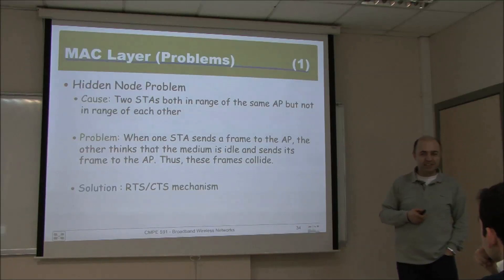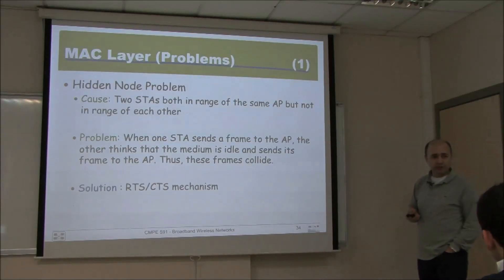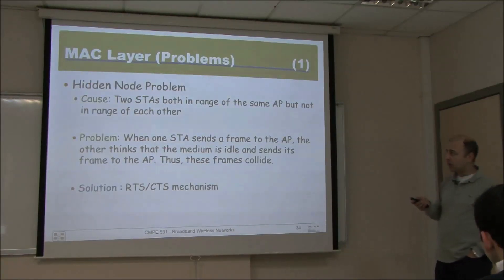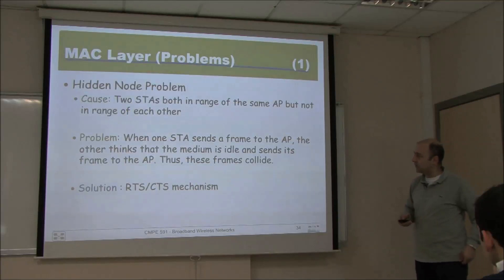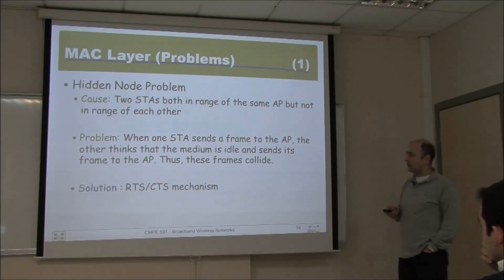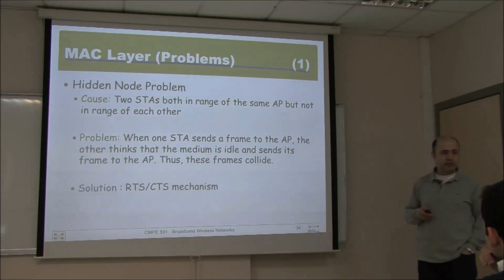As with any wireless system, we need to discuss the hidden node and exposed terminal problems. The hidden node problem occurs when two stations are both in range of the same access point but not in range of each other. When one station sends a frame to the access point, the other thinks the medium is idle since it cannot hear the transmitter, so it also sends a frame — causing a collision at the access point, which cannot properly receive either frame.